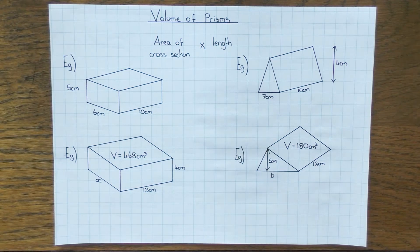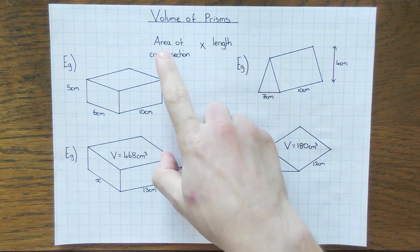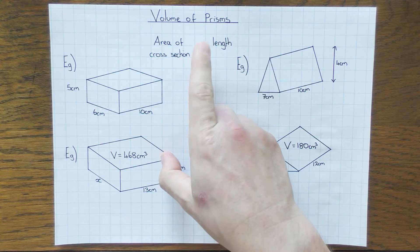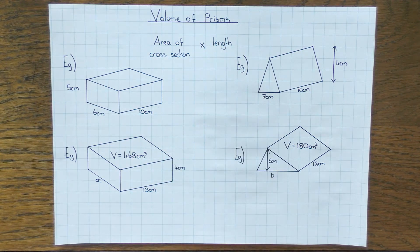Hi guys, in this video we're going to have a look at volume of prisms. The formula for the volume of a prism is written here: it's the area of the cross section times by the length.